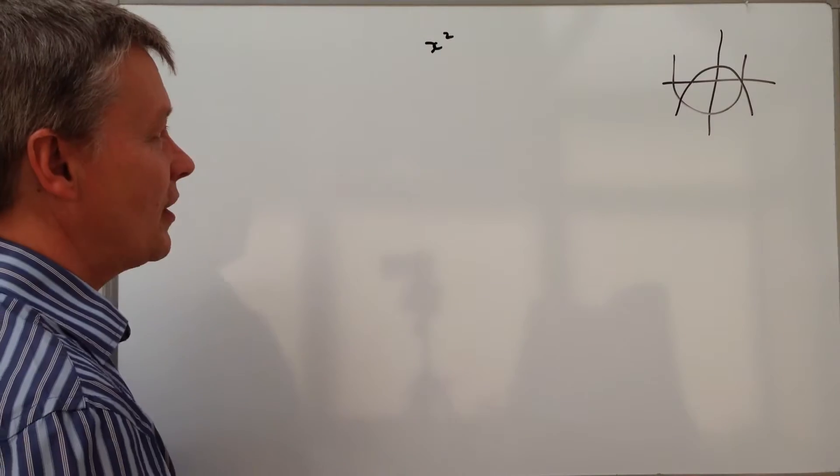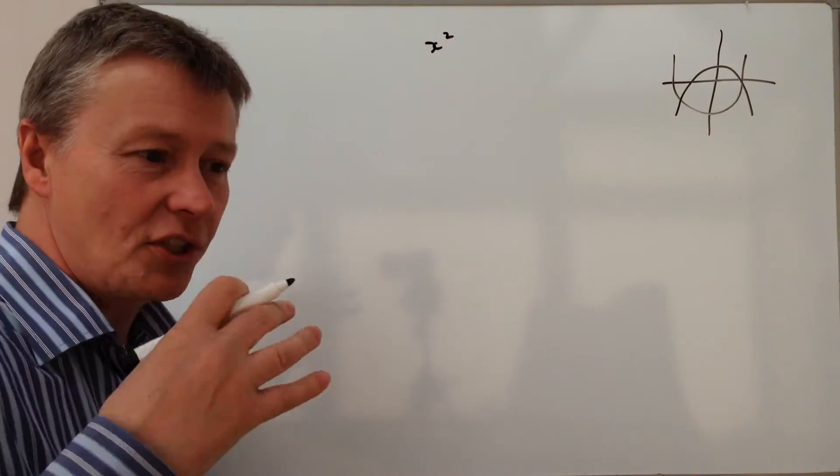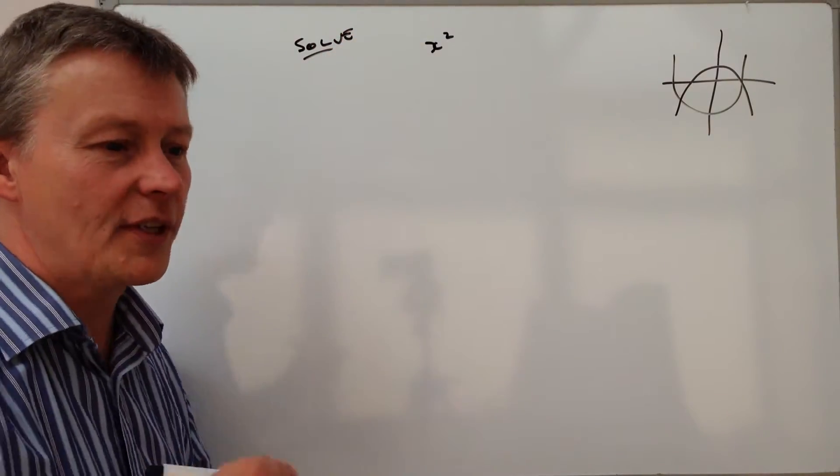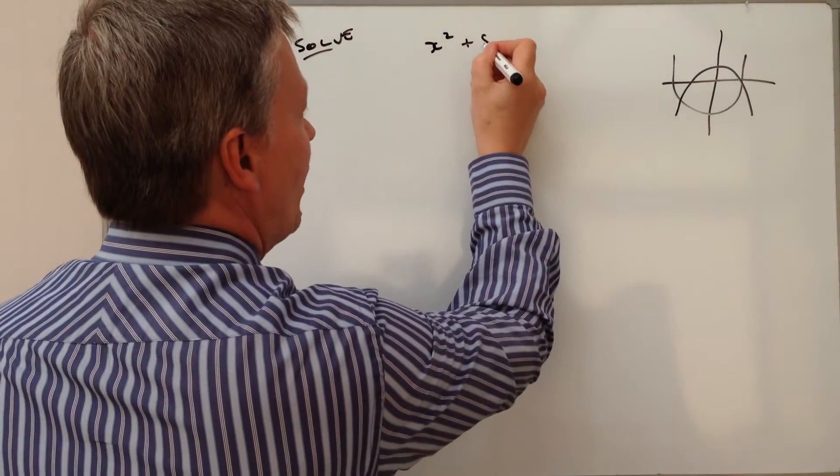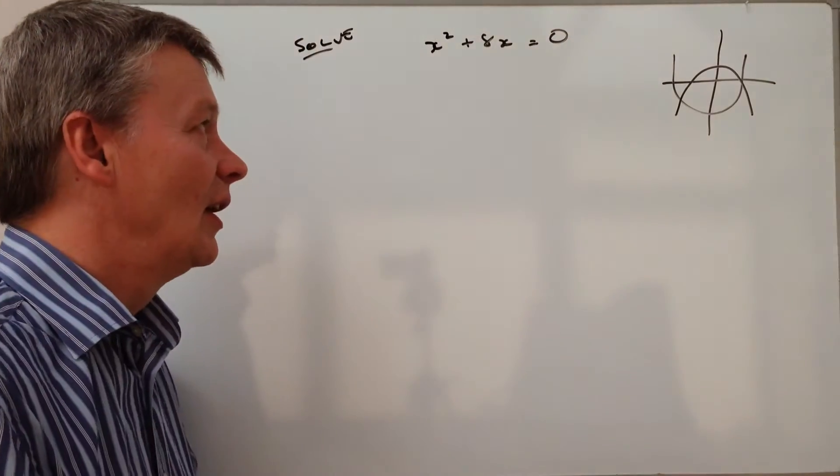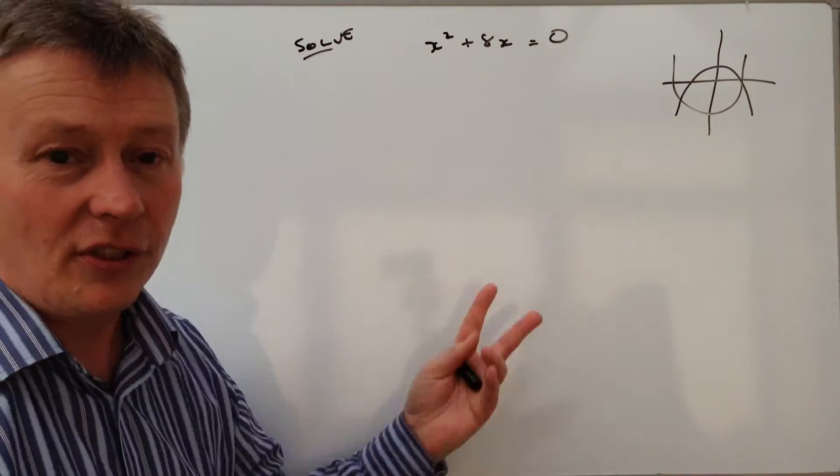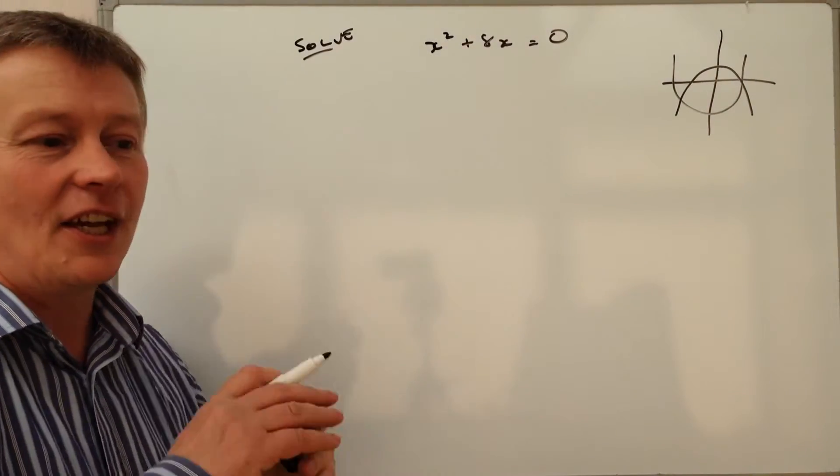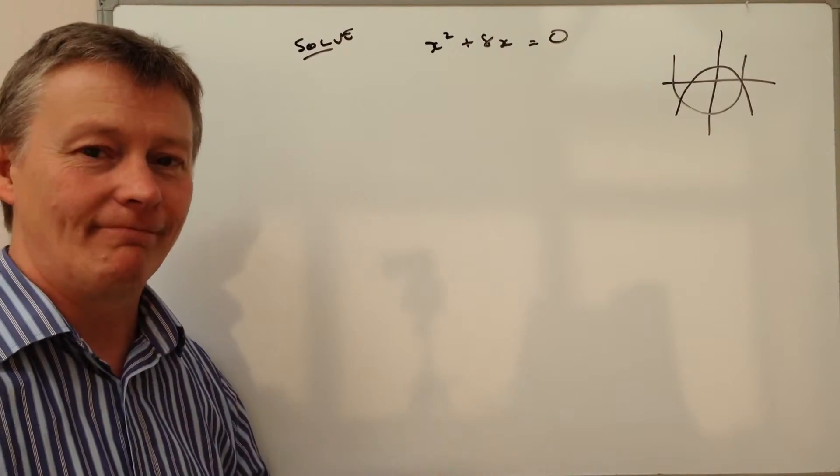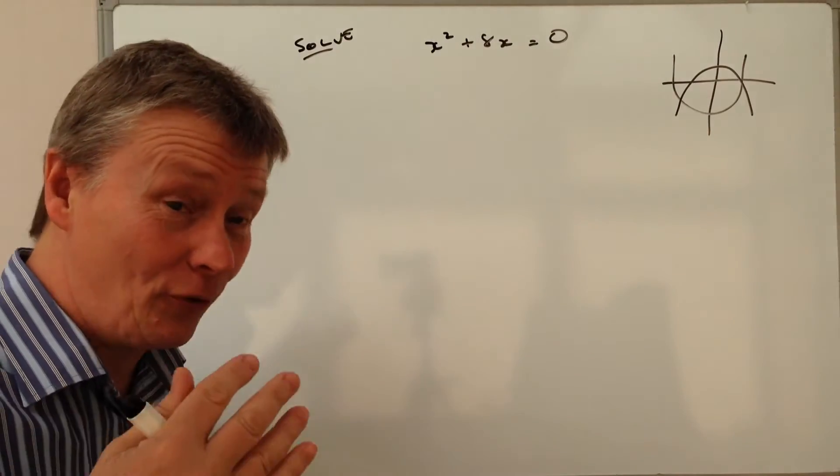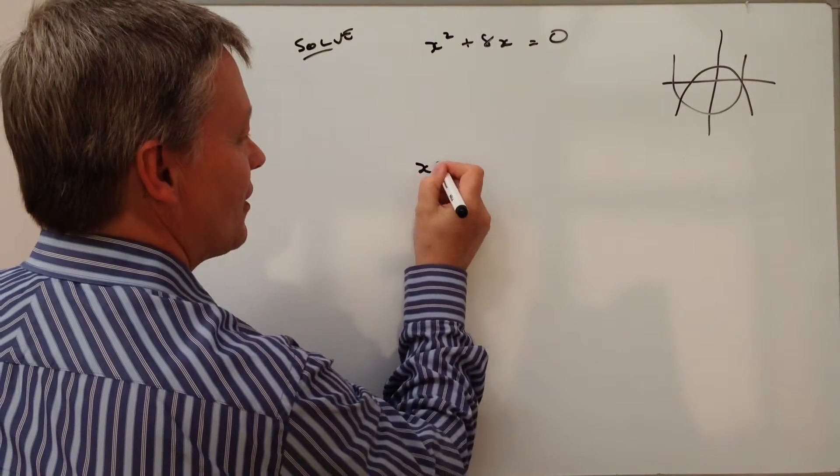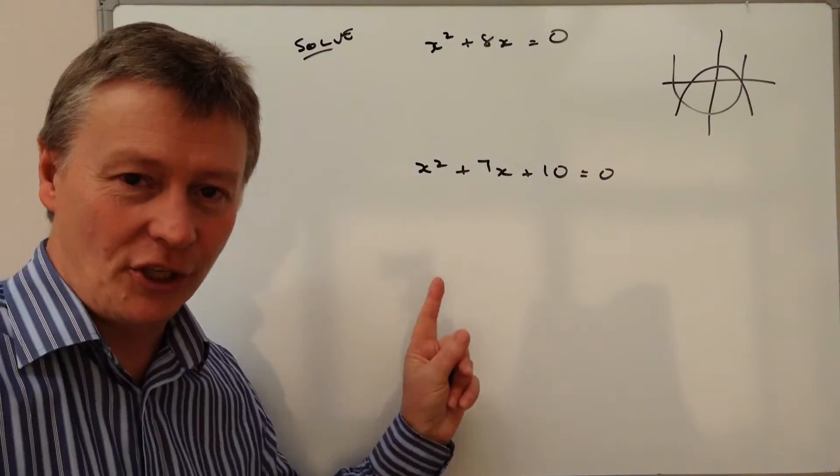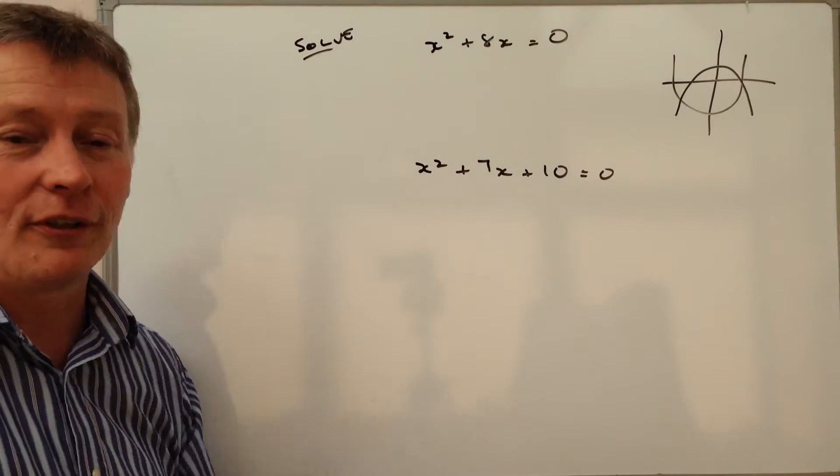I'm going to give you examples of the types that you get. The first one is to solve, in other words find the value of this particular equation, which is x squared plus 8x equals zero. It's got two terms, and with two terms you only need a single bracket. If you've got three terms like x squared plus 7x plus 10 equals zero, you're going to need two brackets.